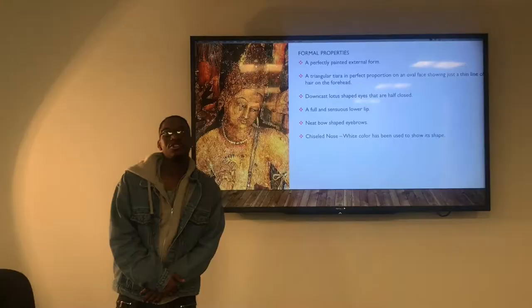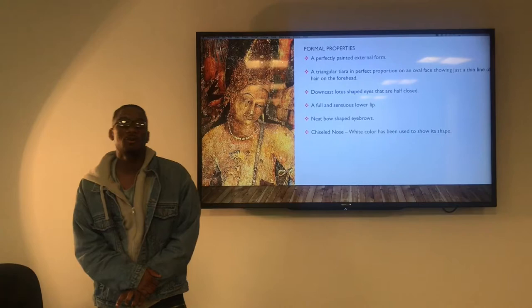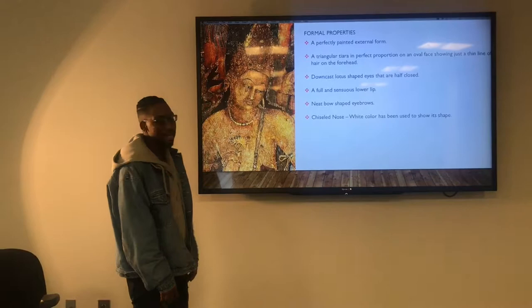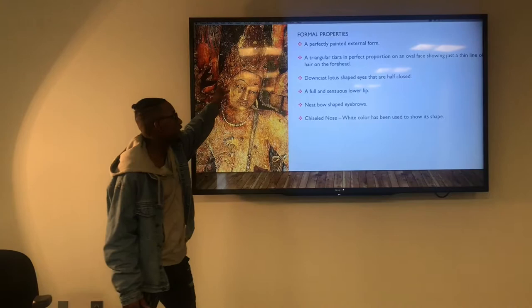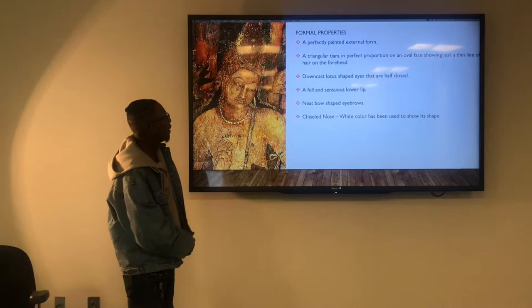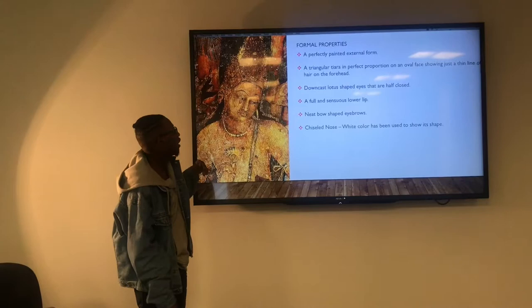Looking at the formal properties of the Bodhisattva, we can see a perfectly painted external form that is smooth and uses earth tones to create a naturalistic ambience. There is a triangular tiara with perfect proportion to the oval face, downcast lotus-shaped eyes, a full sensuous lower lip, a neatly arched unibrow, and a chiseled nose.